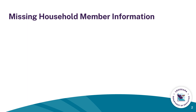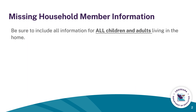When completing your application, it is important to include information for all children and adults living in your home, including any children that do not require care. The number of people living in your household may impact your eligibility status or the co-payment amount for child care assistance.